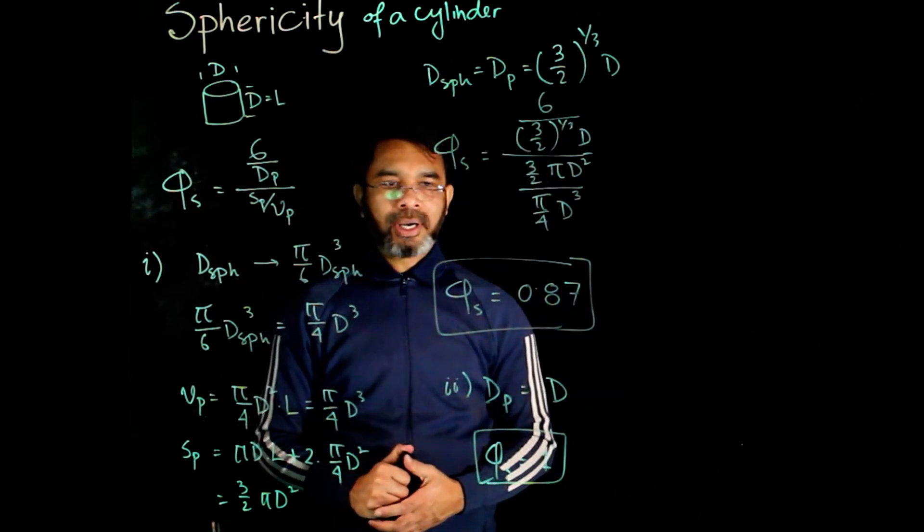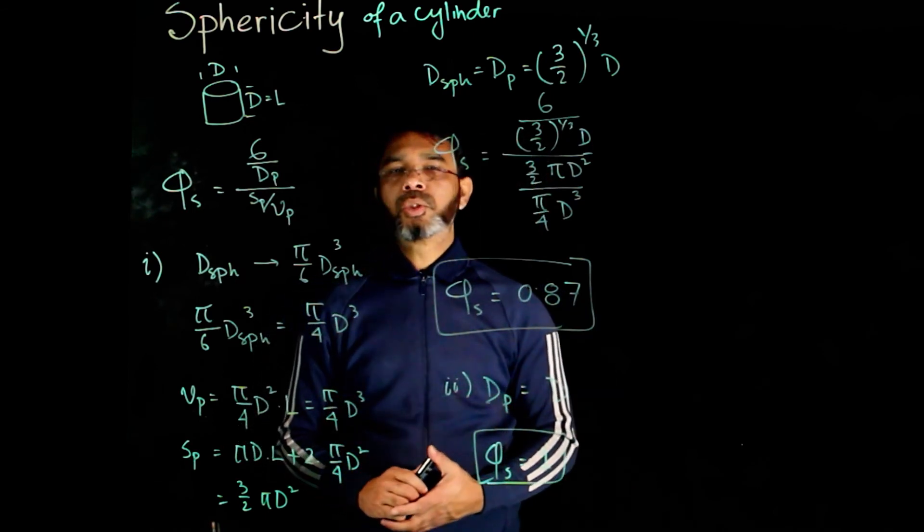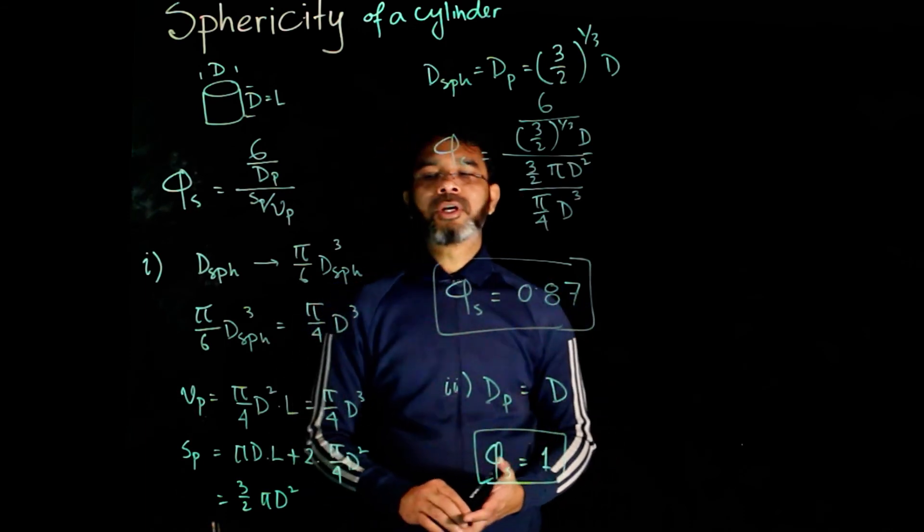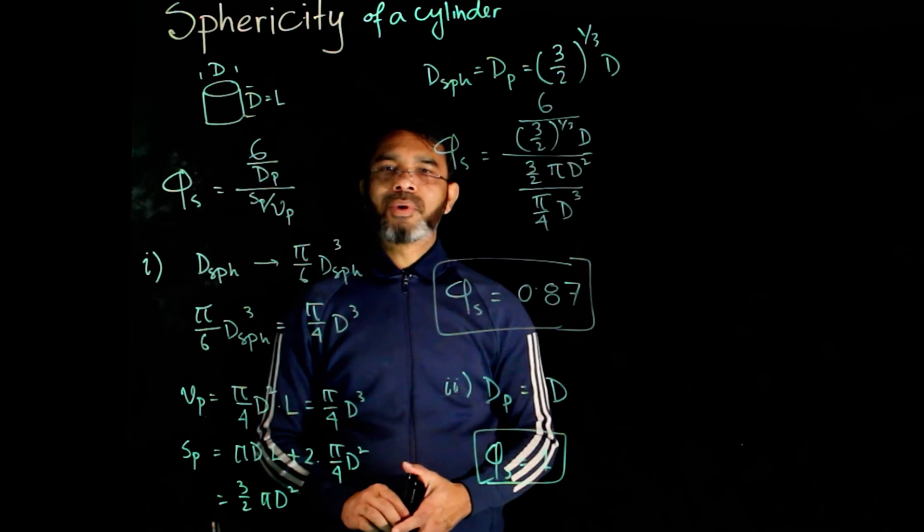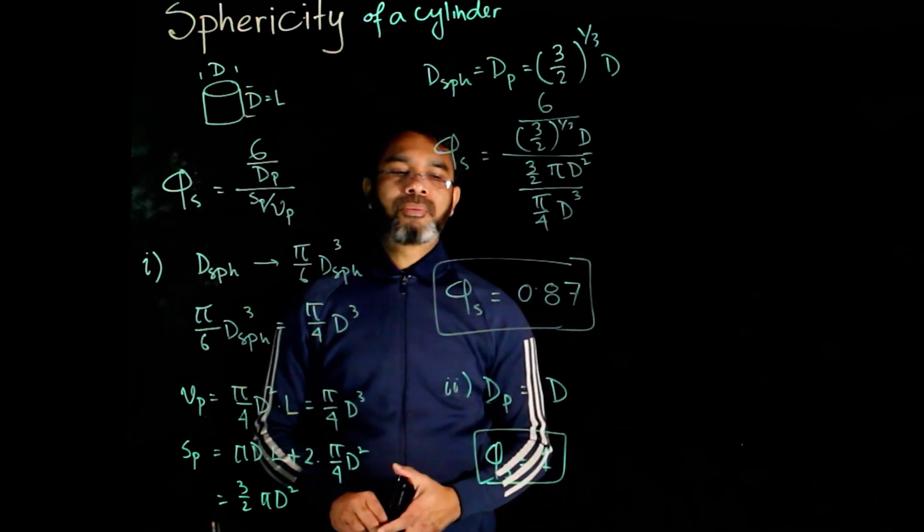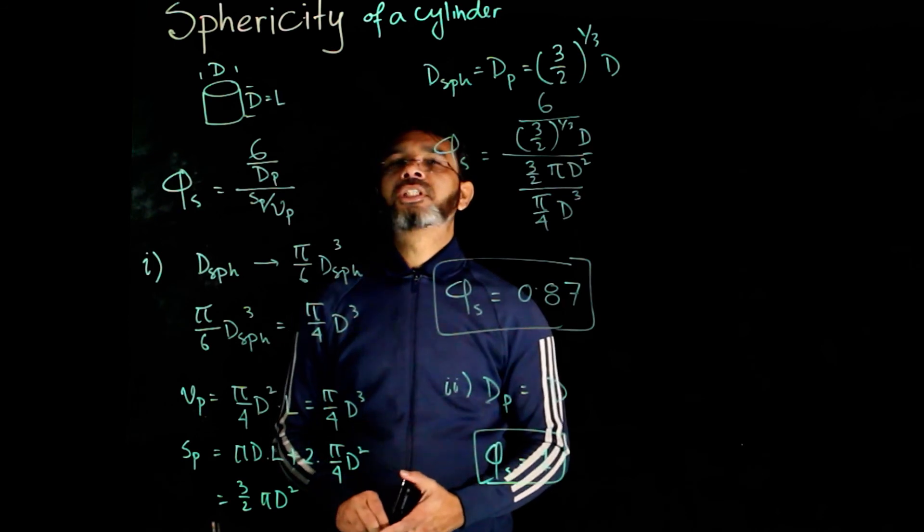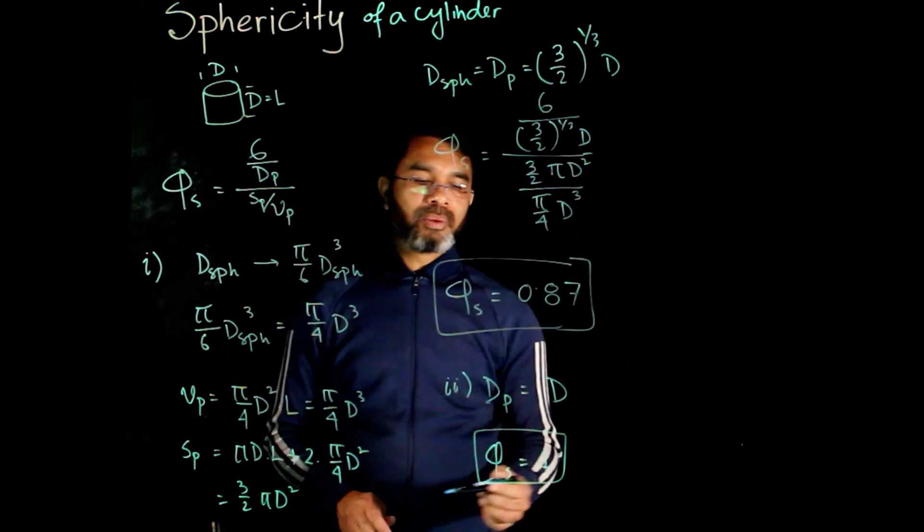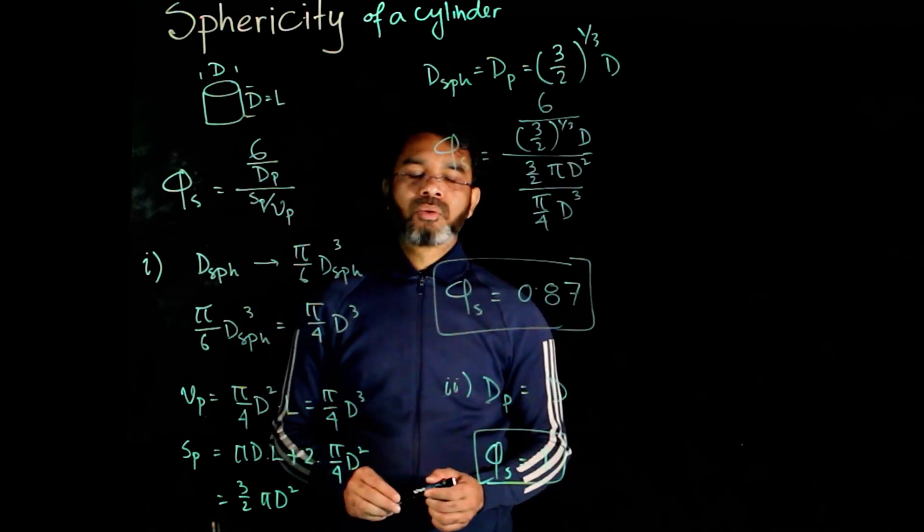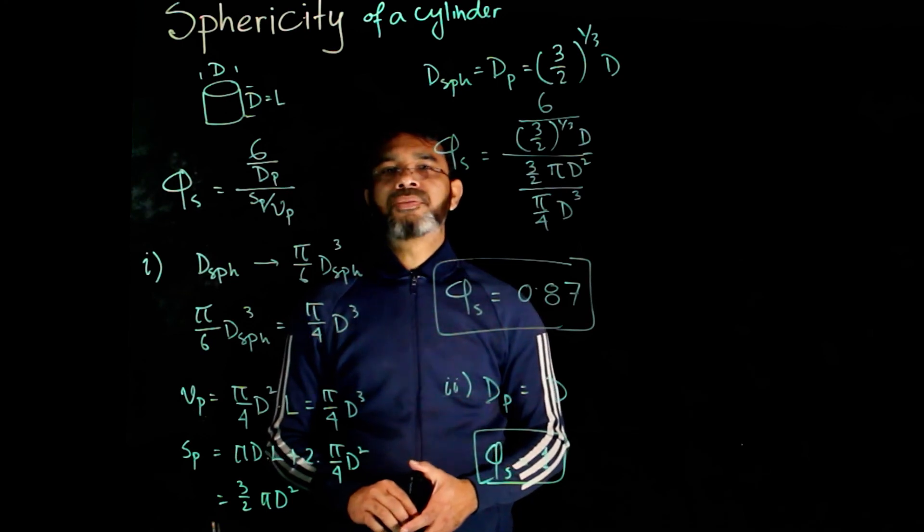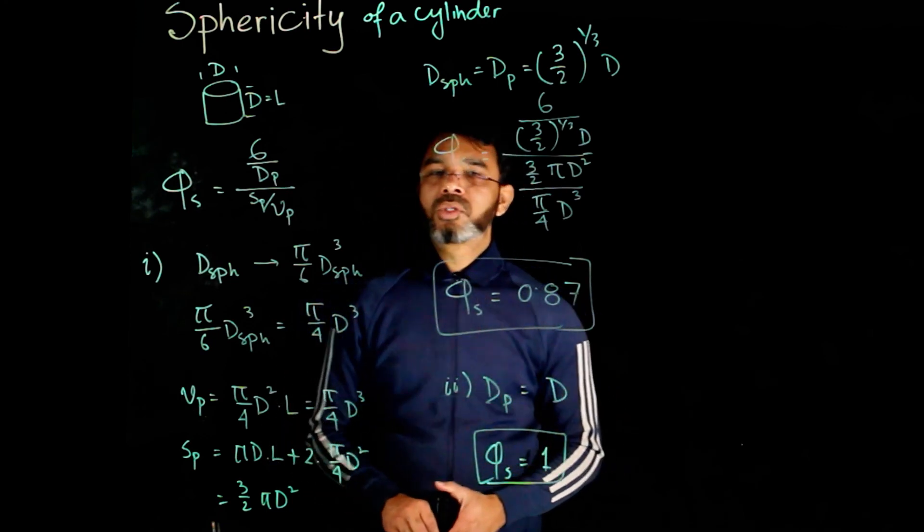So, for some regular shaped particles, the equivalent diameter is defined in two ways. One is the diameter of a sphere having the same volume as the particle, or it can be defined as one of its dimensions. For example, for this short cylinder, it is taken as the diameter of the cylinder itself. If you define it that way, the sphericity becomes 1. That is why in your textbook, the values of sphericity is given as 1.